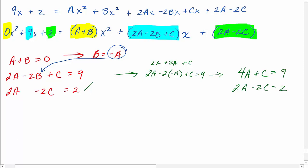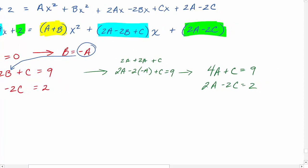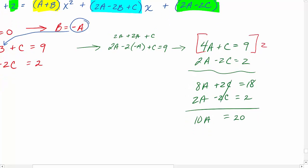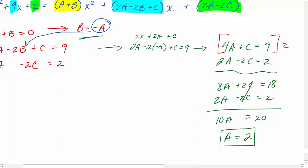In order to use the addition method, I'm going to have to multiply the top equation by 2. That'll give us 8a plus 2c equals 18, and then 2a minus 2c equals 2. Adding down, we get 10a equals 20, so a has to be 2. We can easily get b. b is equal to negative a, so b is going to be equal to negative 2.